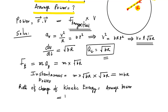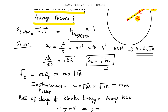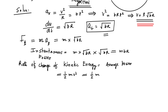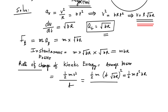Kinetic energy is half mv squared. The particle starts from rest, so the initial kinetic energy is zero. Final kinetic energy is half m times (t times square root of br) squared, which gives half m times bt squared r. Dividing by time t to get the average rate, average power equals half m times b times r times t.